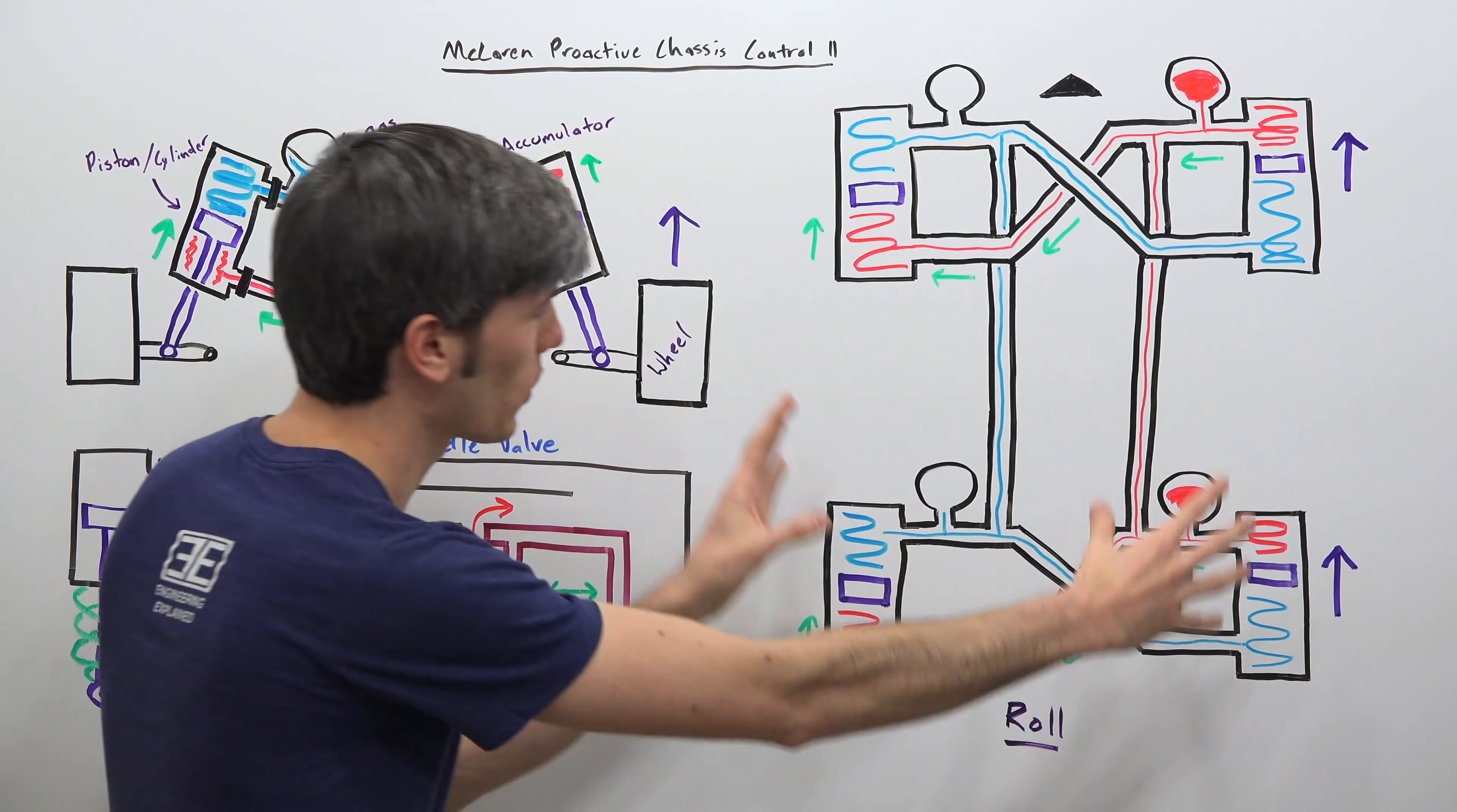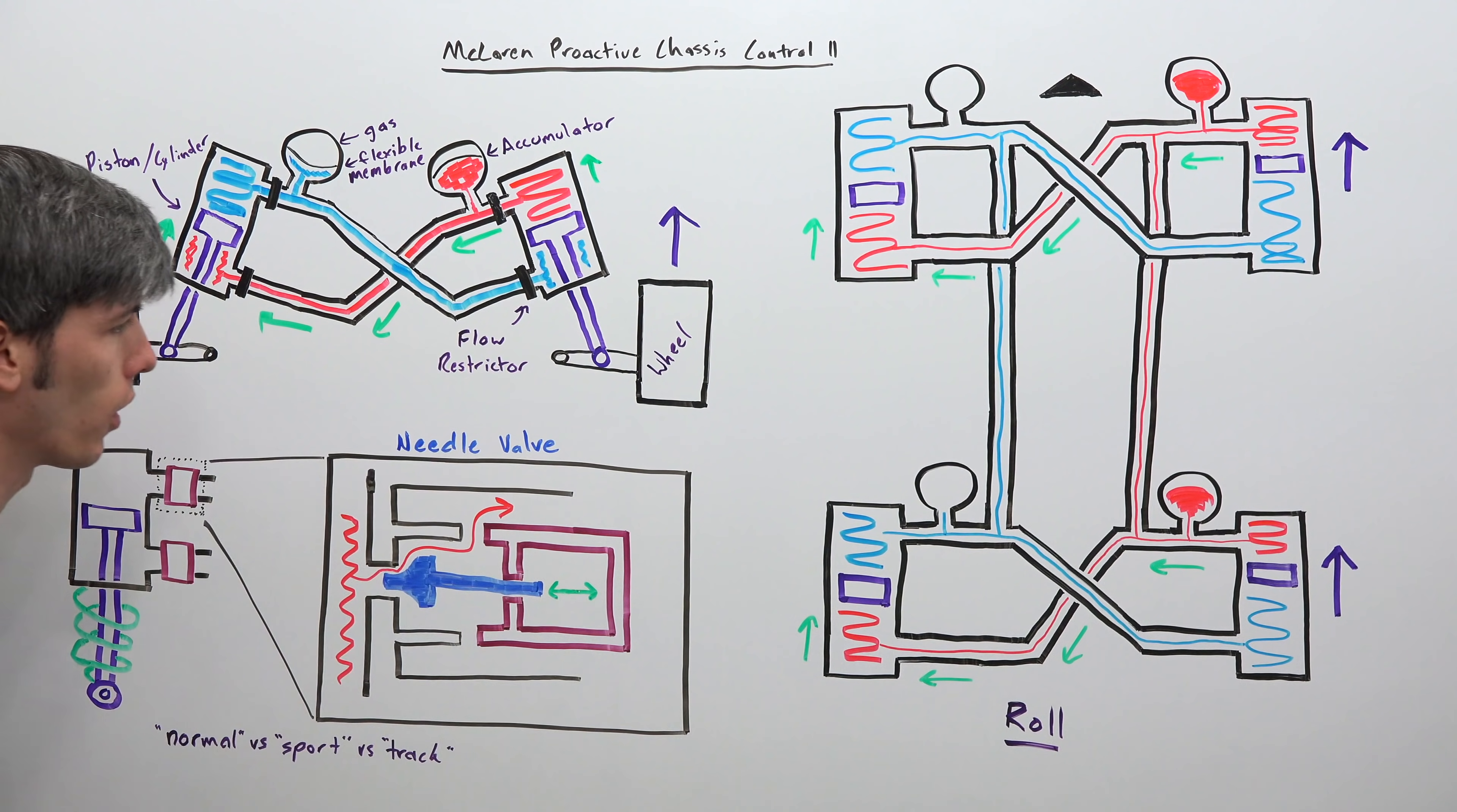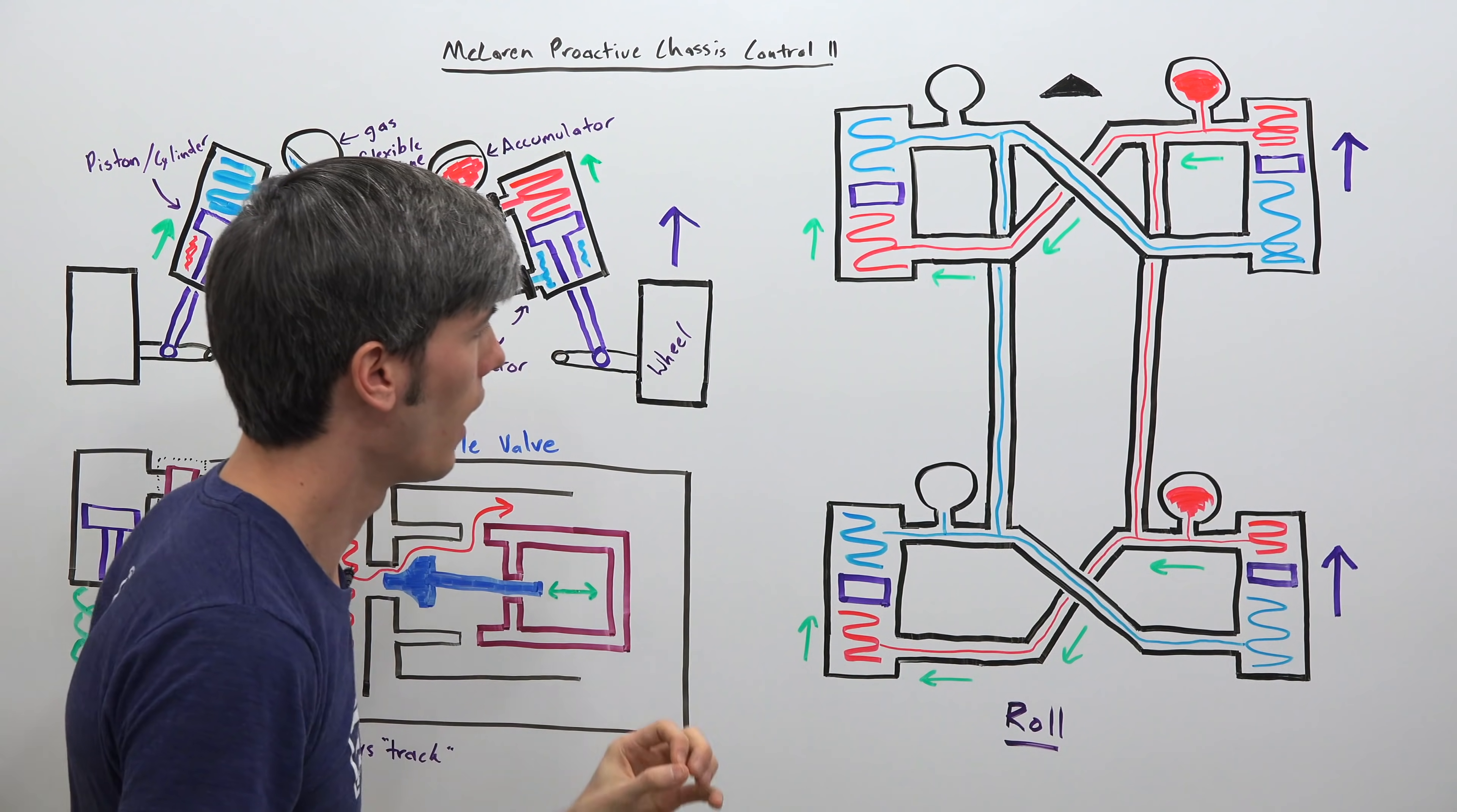Alright so now let's apply what we've learned here to the entire car as a whole and so we're going to walk through four different scenarios starting with roll. Roll being the easiest one to understand because we've basically already explained how it works, now we're just simply going to apply it to the entire car.